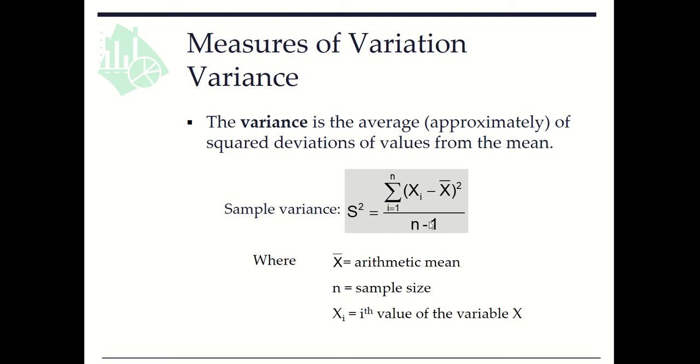Be careful, here the denominator is the sample size minus one, not the sample size. Technically, this is to get an unbiased estimate of population variance.